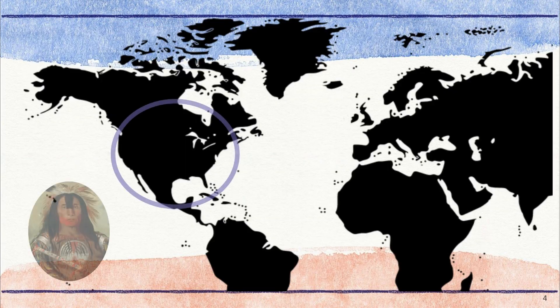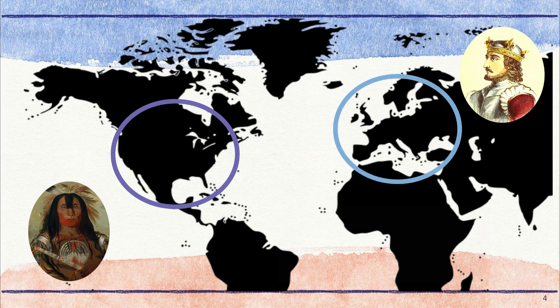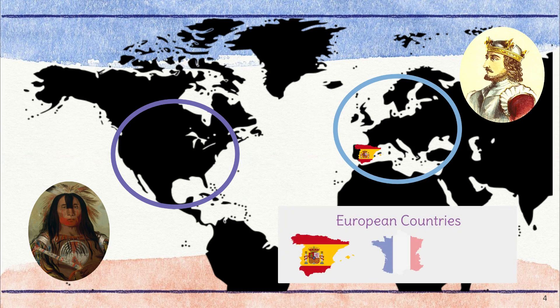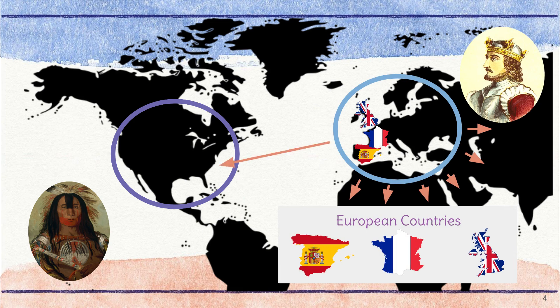Native Americans lived in tribes across North America. While in Europe, powerful kings ruled the countries of Spain, France, and Britain. Once these kings realized that there was a whole new world across the ocean, they began sending ships and people across the sea to establish colonies. A colony is a settlement or place where people from one country moved to live in a new country. People from Europe were moving to build colonies or settlements in North America. The people that made the long, dangerous journey from Europe to live in North America were called colonists.